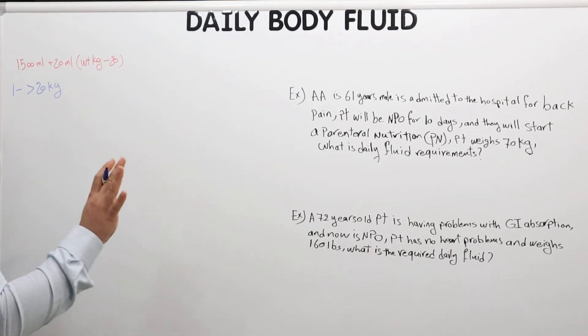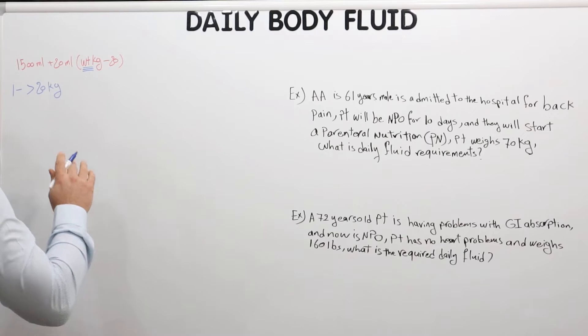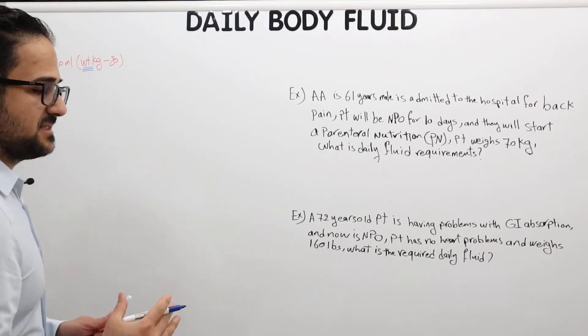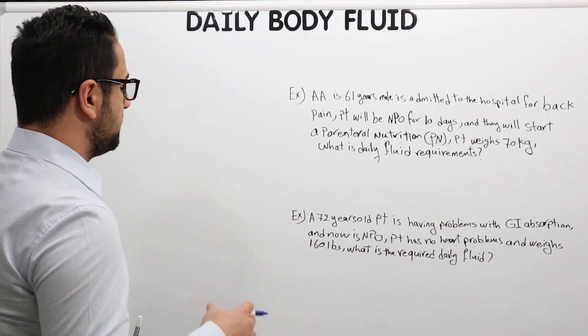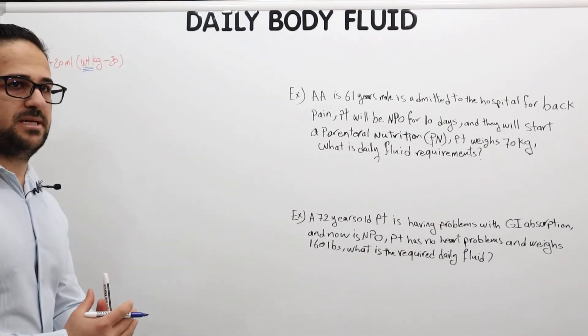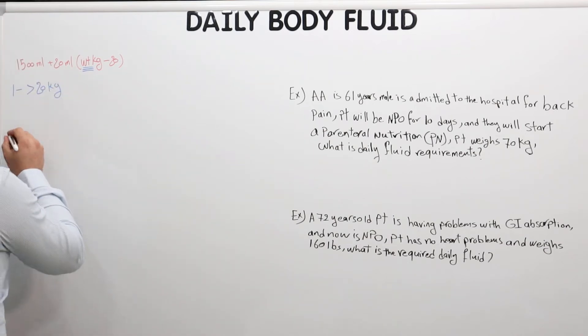One more thing to keep in mind is that this is the total body weight. It's not the ideal body weight and it's not the adjusted body weight. It's only the total body weight, which is the weight when the patient comes in and you take it on the scale. This is the weight we're using. So number two, total body weight is the only one used.